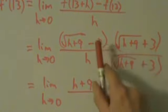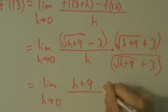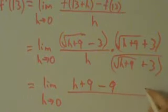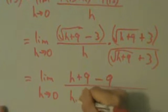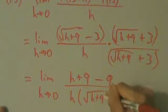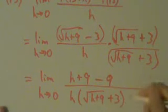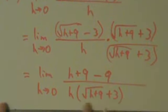Okay, and then last is minus 3 times plus 3, which is minus 9. All right, so then on the bottom, we just have h times root h plus 9 plus 3. All right, and make sure that you keep these parentheses in here. They are necessary.